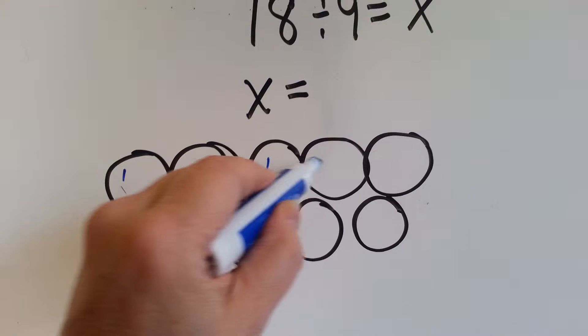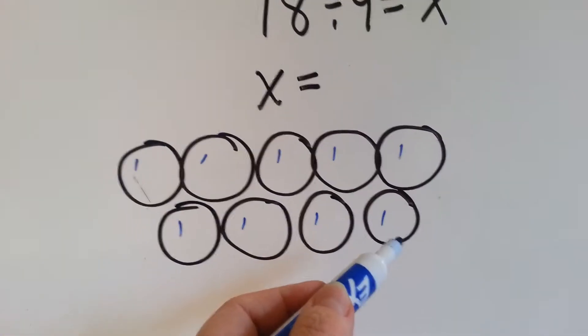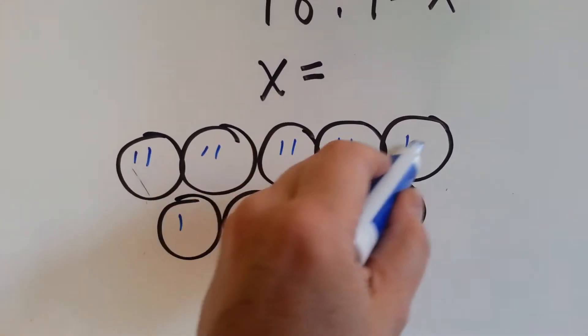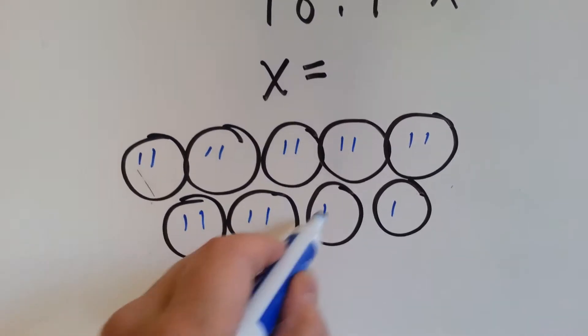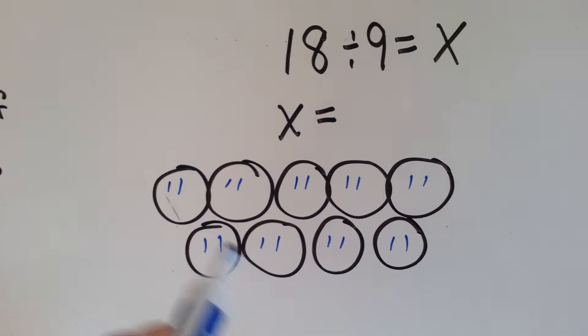1, 2, 3, 4, 5, 6, 7, 8, 9. That makes sense because we know there's 9 groups. 10, 11, 12, 13, 14, 15, 16, 17, 18. How many dots are in each group? 2.